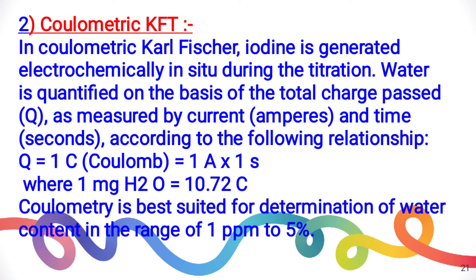In coulometric Karl Fischer titration, the titrant is produced inside the titration flask electrochemically. Iodine is generated electrochemically inside the titration flask during the titration, and the amount of water present is quantified by the total charge as measured by current in amperes and time in seconds. The relation is: charge (q) equals current multiplied by time, i.e., q = 1 coulomb = 1 ampere × 1 second, where 1 milligram of water consumes 10.72 coulombs of charge. By this relation, we can calculate the amount of water present inside the sample.